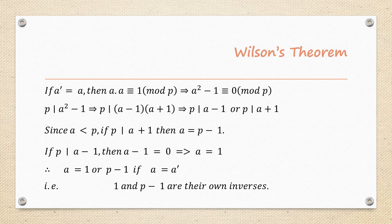Therefore P divides A² - 1. Applying the difference of squares: A² - 1 = (A+1)(A-1), so either P divides (A-1) or P divides (A+1). Since A < P, if P divides (A+1), then A = P-1. If P divides (A-1), then A - 1 = 0.